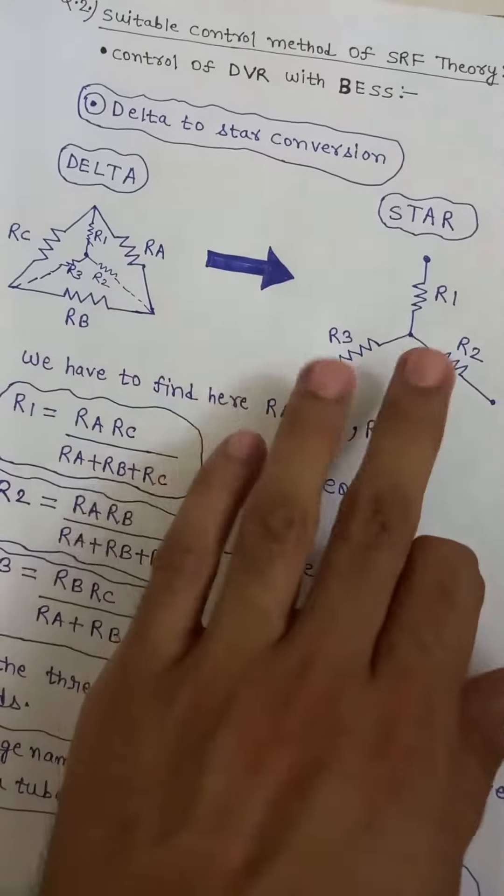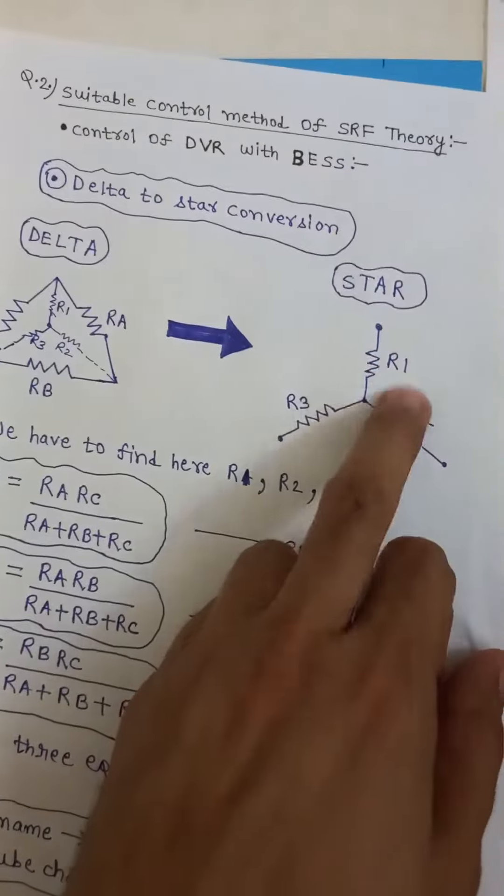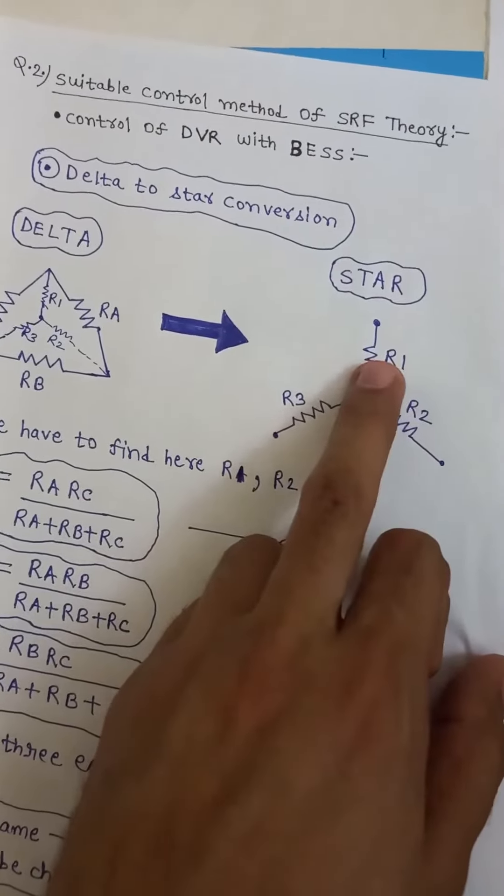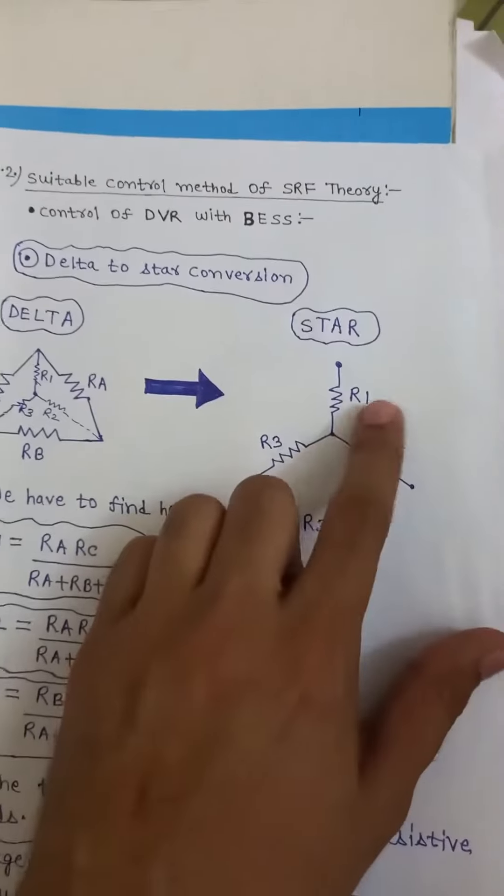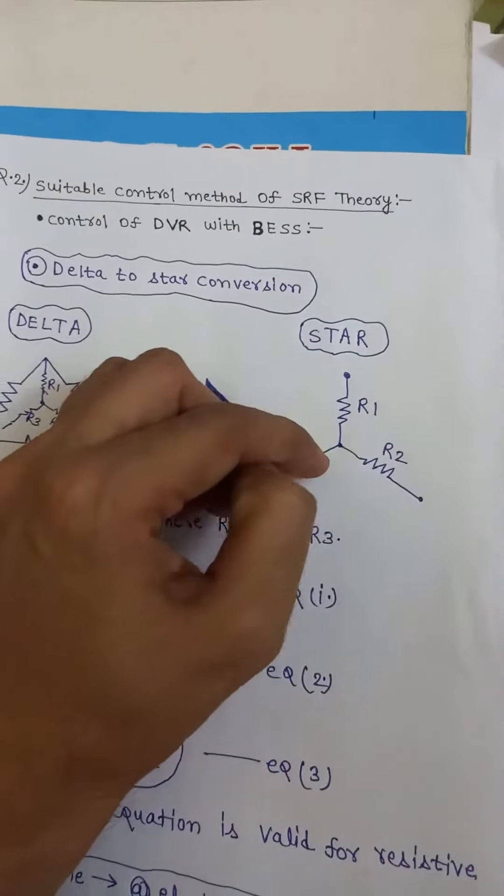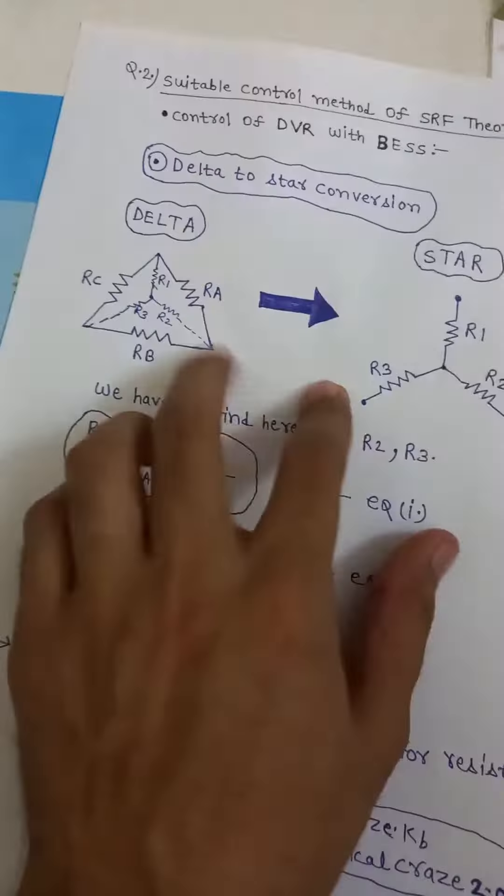Now we have to convert into a star. This is the star connection and we have to find R1, R2 and R3. So see a delta connection is there. This is the star connection, with R1, R2, R3, and this circuit put in a delta.